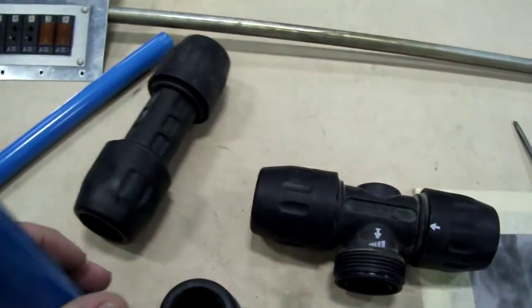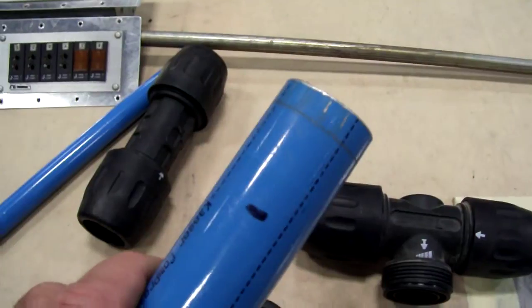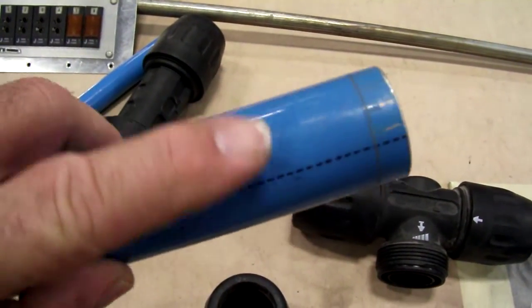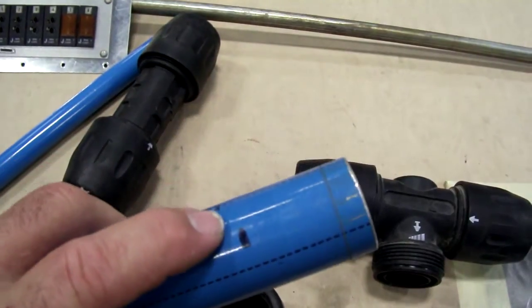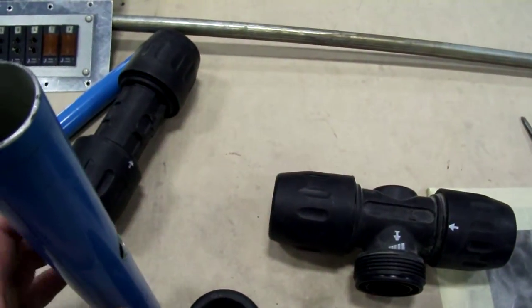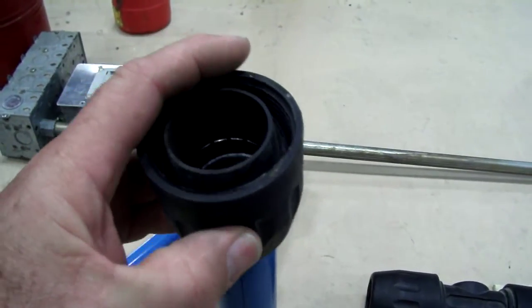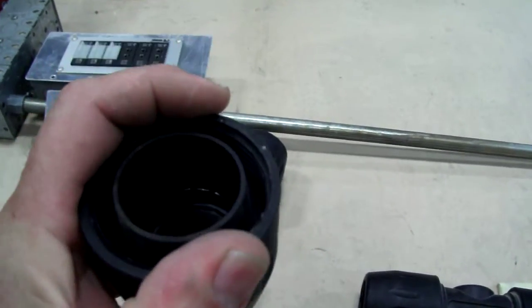All you do is mark the tubing a specific measurement. That black line right there is it. So basically, you're taking the nut and pressing it on the tube to that line.